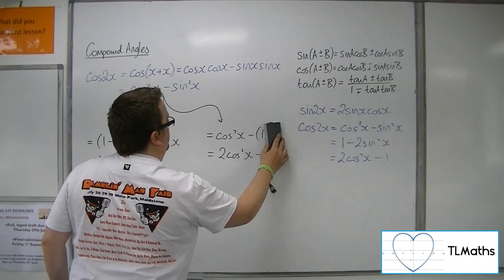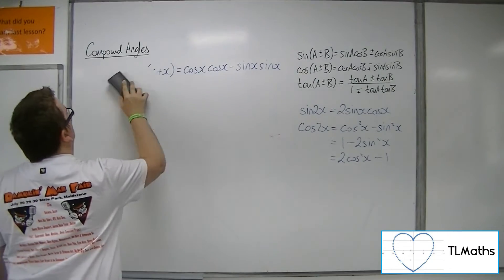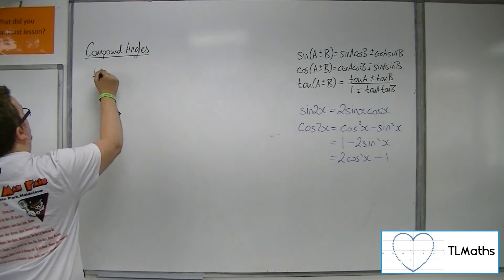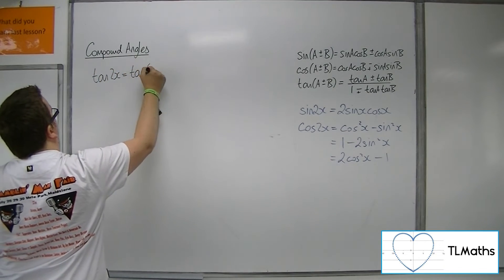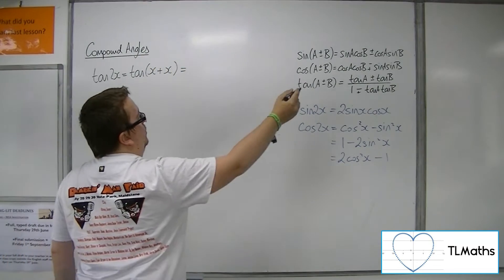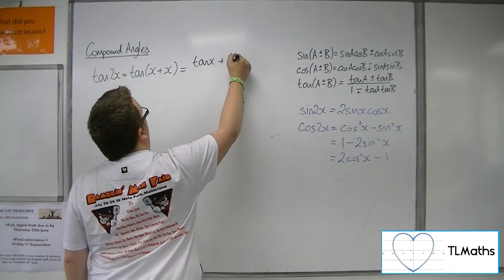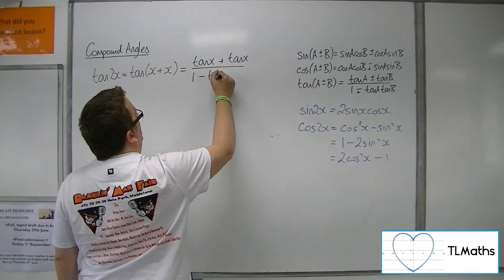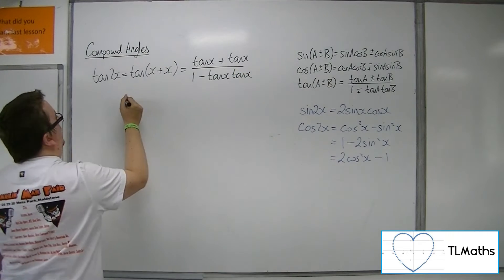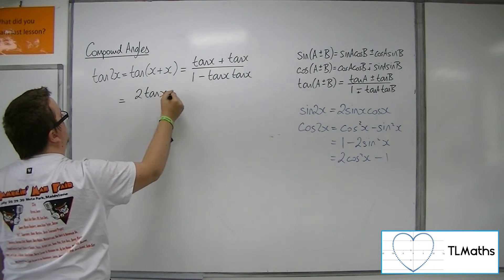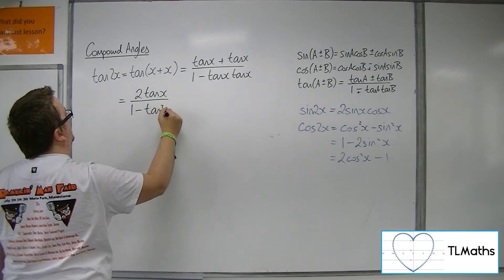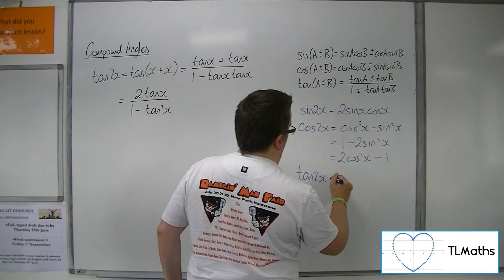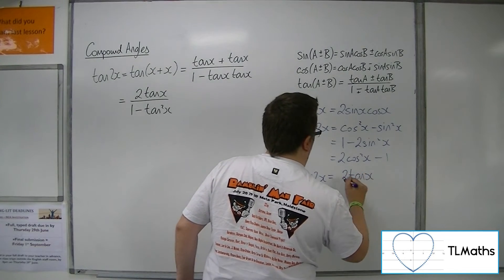And then finally, tan of 2x. Using a similar approach, we write that as tan of x plus x. So that gives tan x plus tan x over 1 minus tan x times tan x — because it's a plus, we get a minus in the denominator. So we have 2 tan x in the numerator and 1 minus tan squared x in the denominator. That is the last double angle formula.